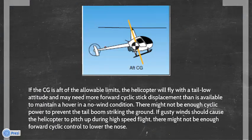If the CG is aft of the allowable limits, the helicopter will fly with a tail-low attitude and may need more forward cyclic stick displacement than is available to maintain a hover in a no-wind condition. There might not be enough cyclic power to prevent the tail boom striking the ground. If gusty winds should cause the helicopter to pitch up during high-speed flight, there might not be enough forward cyclic control to lower the nose.